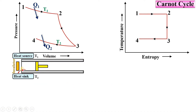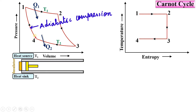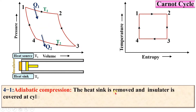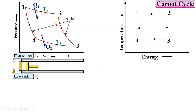Process 4 to 1 — adiabatic compression: the insulator is covered again so there is no heat transfer. The air is compressed with a reversible adiabatic process from V4 back to V1. On the TS diagram this is a vertical line — it is isentropic. In summary, processes 1-2 and 3-4 are isothermal, and processes 2-3 and 4-1 are adiabatic.